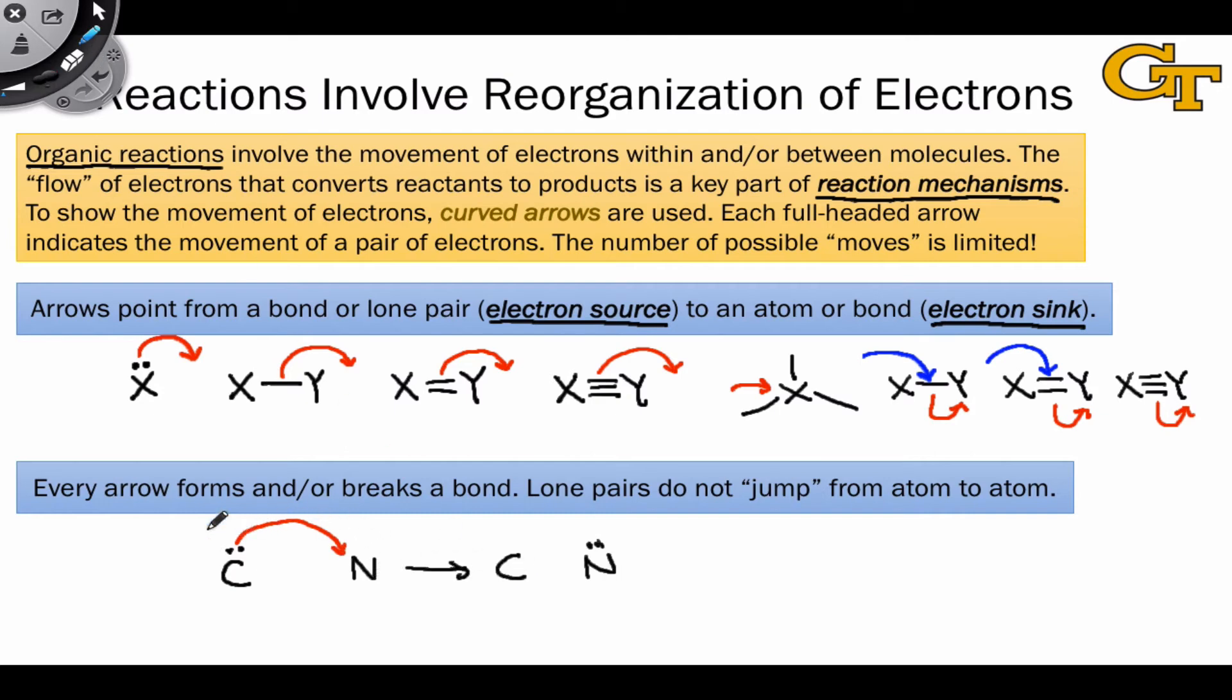This doesn't make sense. In fact, that arrow would be interpreted as meaning the formation of a bond between carbon and nitrogen. So, this type of electron flow we don't depict using curved arrows.